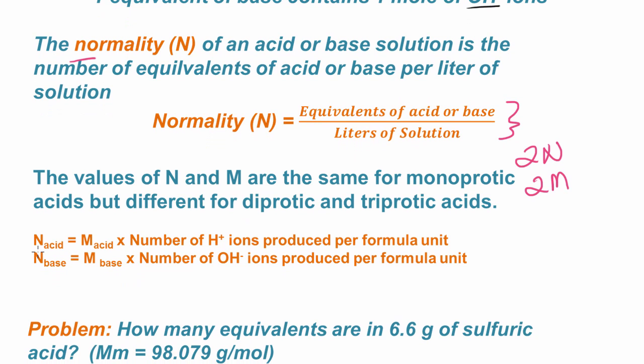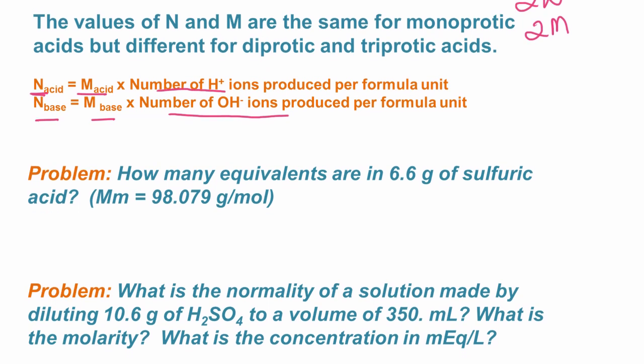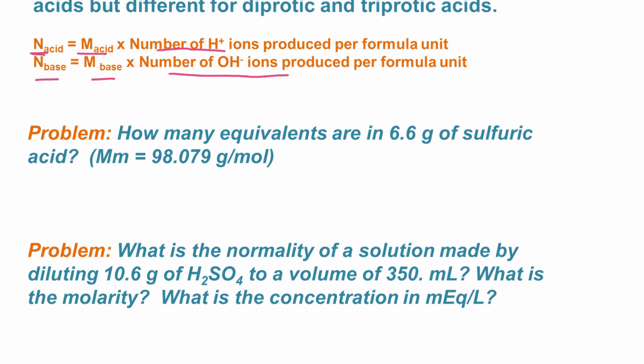So if we know the molarity of the acid, we can find the normality and we take the molarity multiply by the number of hydrogen ions that are produced per formula unit. And then the normality of a base can be found if we know the molarity and we multiply that by the number of hydroxide ions produced in the formula unit. So let's just do a few examples here to see what's going on.